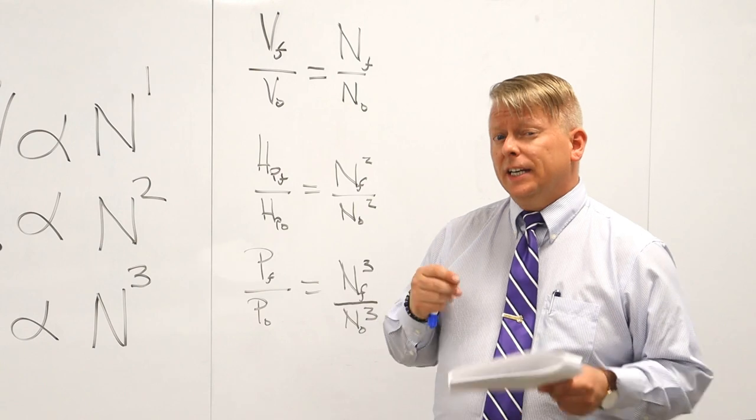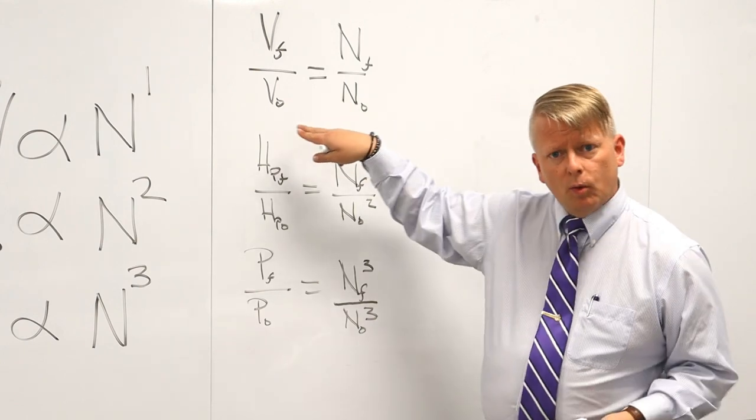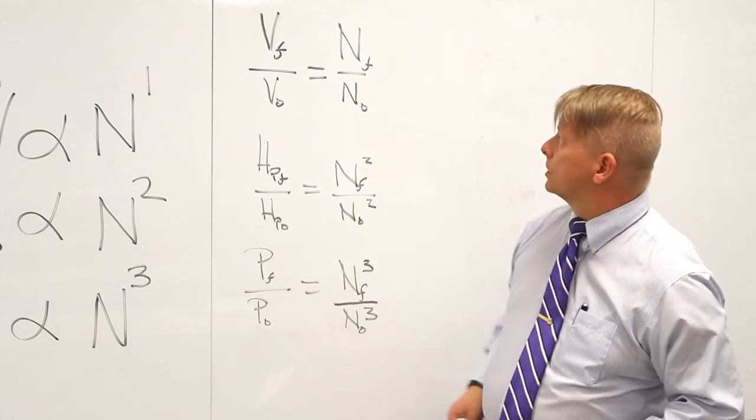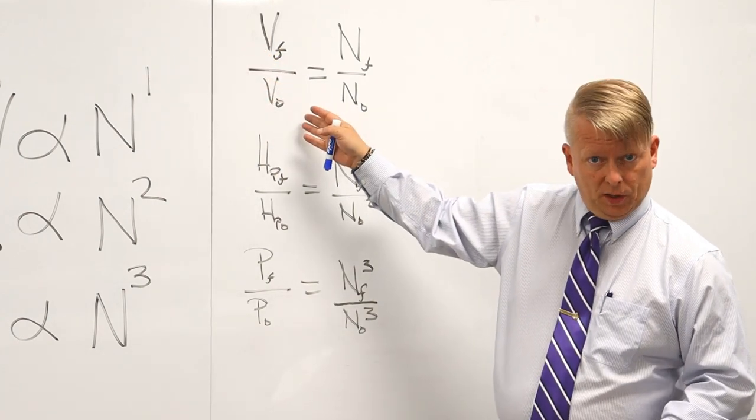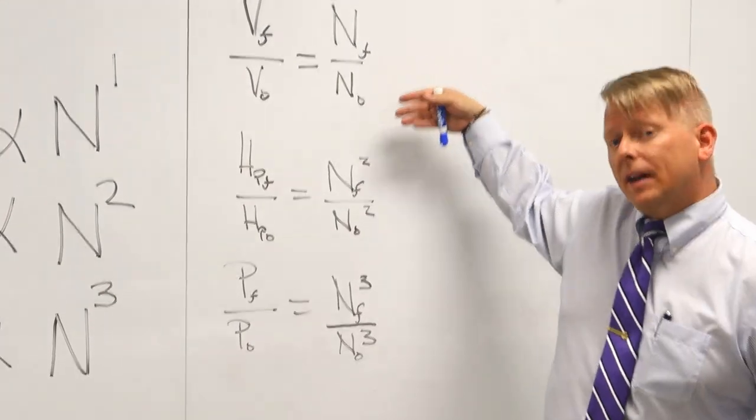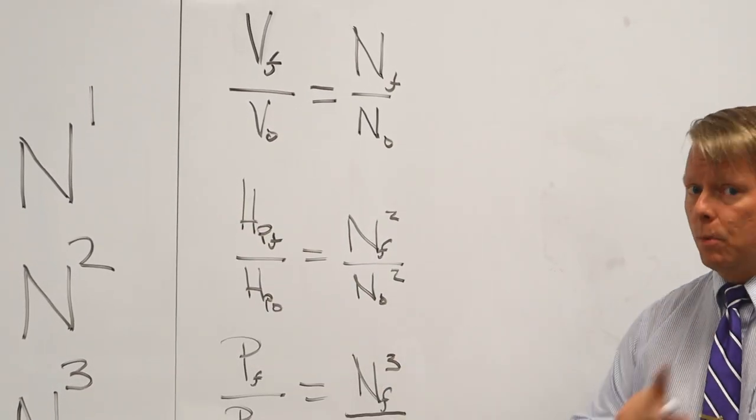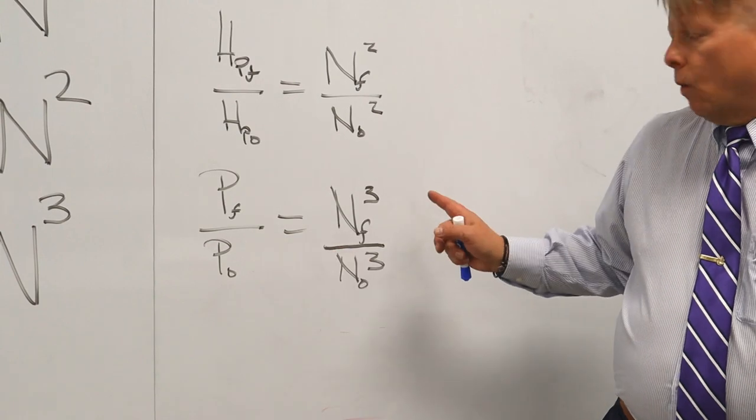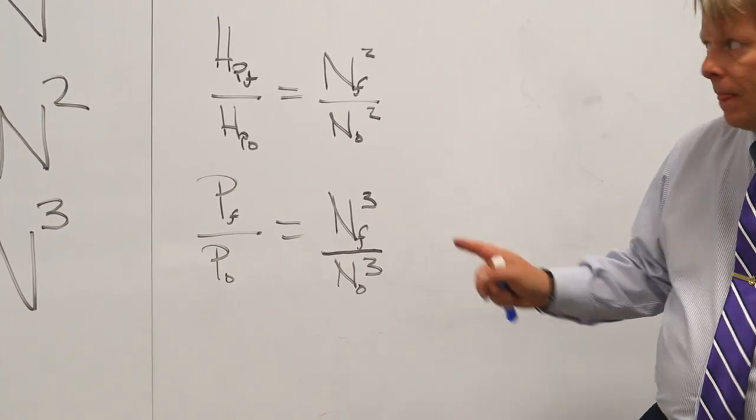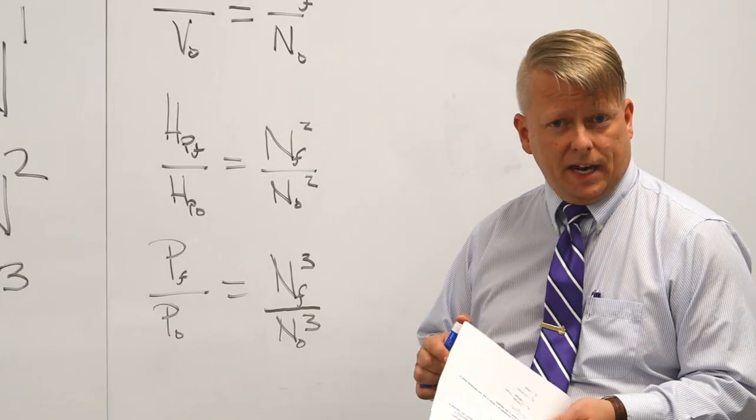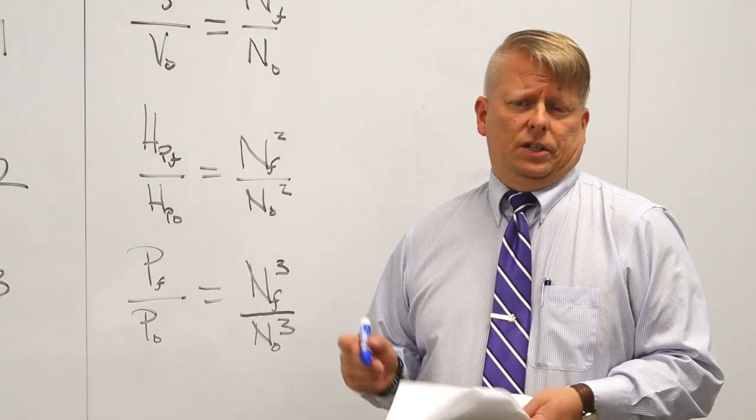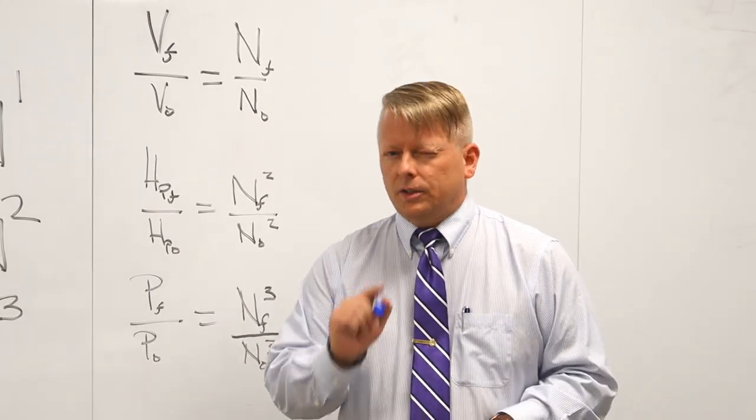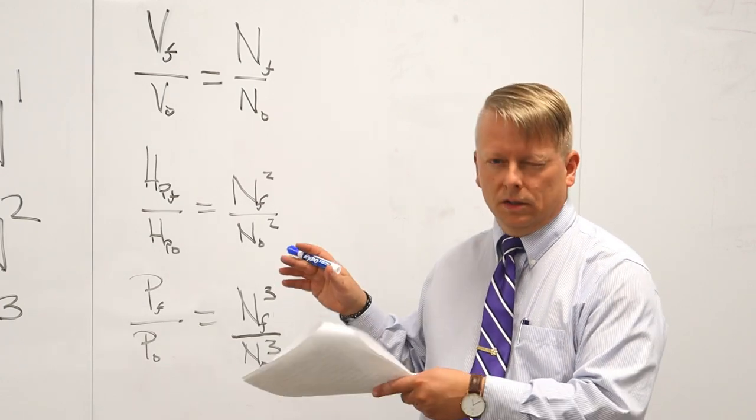Now that we've established that very hard problems are as easy as one two three, now we can actually put it into a relationship that looks at an initial value and a final value. So what I put on the board here shows the same basic relationship expressed in initial versus final terms. Final volumetric flow rate divided by initial volumetric flow rate is equal to final speed divided by initial speed. I've done the same thing for pump head but we remember that it's speed squared. And then I've done the same for pump power which again is a cubic relationship.